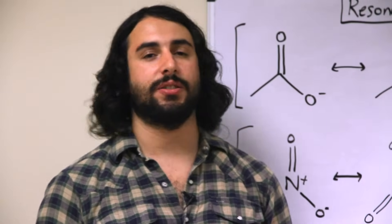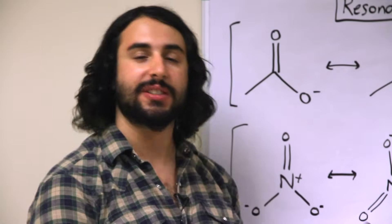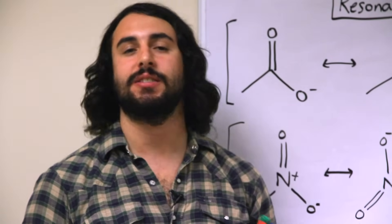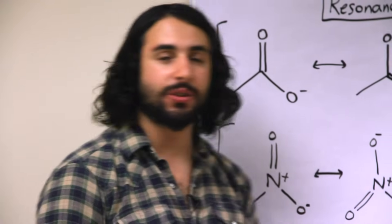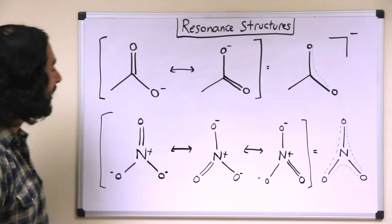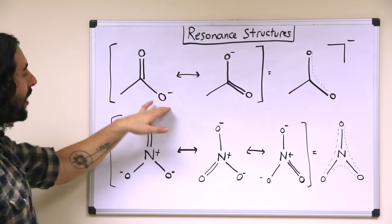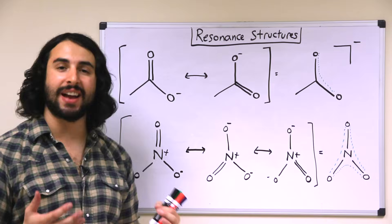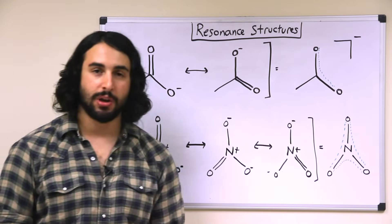Most resonance structures are going to contain atoms that bear a formal charge. So before we investigate these structures, I wanted to review really quickly how we can tell whether an atom will bear a formal charge. Let's take a look at some of these polyatomic ions — for example, in this structure, why is it that that oxygen atom has a formal negative charge localized on it?